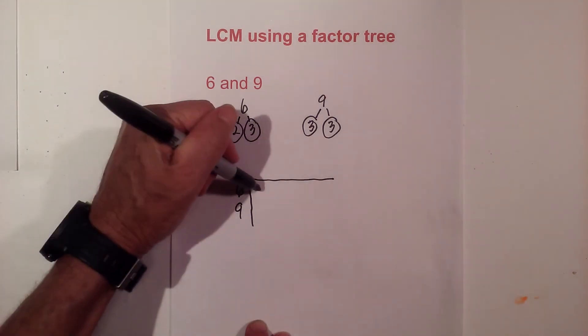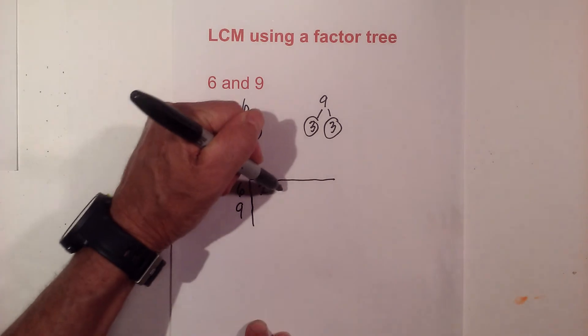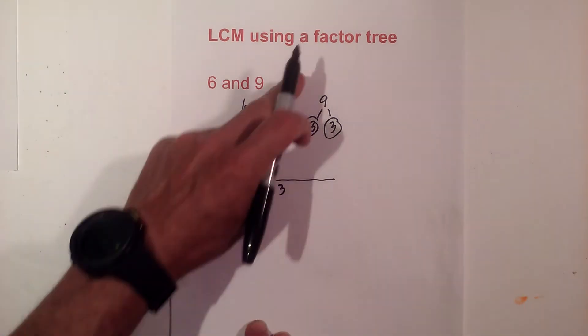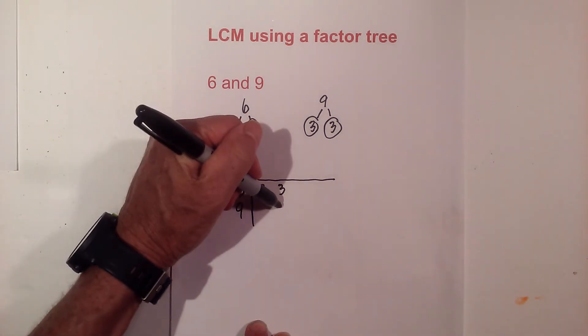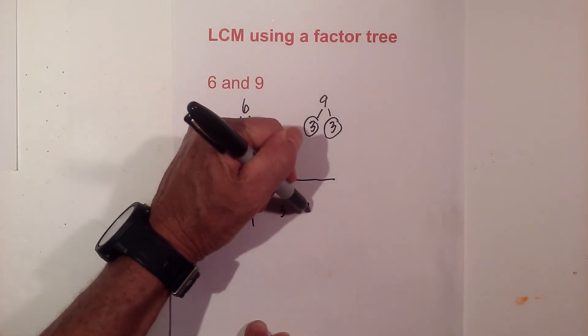So I'm going to write the prime for 6 so I have 2 and 3 and now for 9 I do not have a 2 so I won't write it there I have a 3 and a 3.